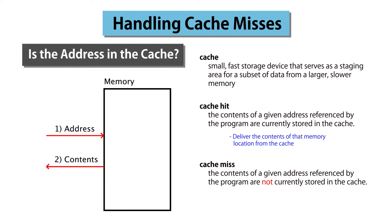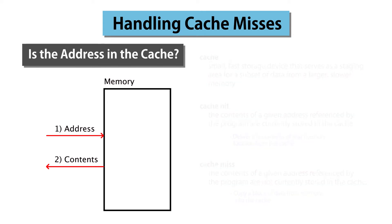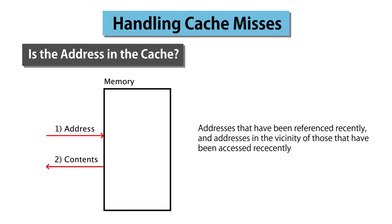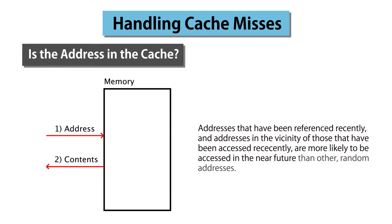In the case of a miss, we typically copy a block of data from memory into the cache. That block must contain the address of the current access, but also some neighboring addresses. The underlying presumption is that addresses that have been referenced recently, and addresses in the vicinity of those that have been accessed recently, are more likely to be accessed in the near future than other, random addresses. This property is called locality. Once in the cache, subsequent accesses to those addresses will be fast.